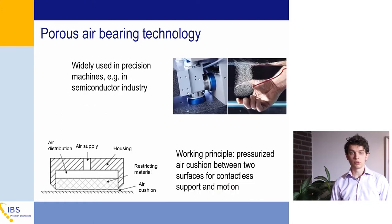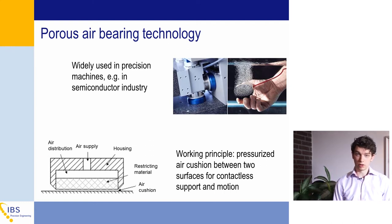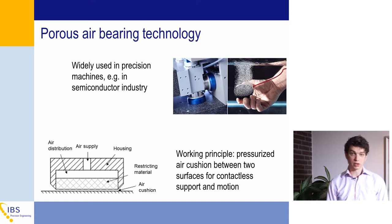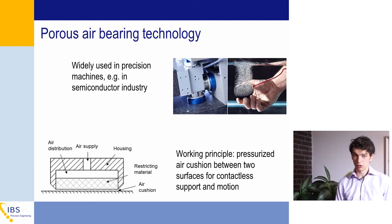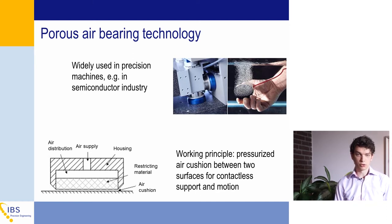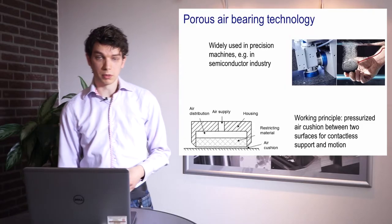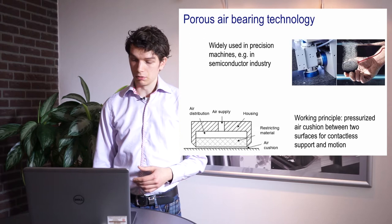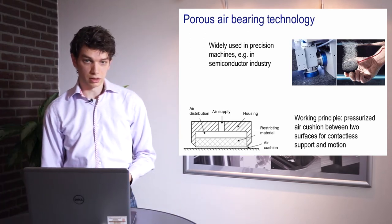First, some introduction about air bearing technology. Air bearings are already widely used in all kinds of precision applications, for instance in the semiconductor industry. The working principle is very simple: a flow of pressurised air is forced through a restricting surface. If this surface is pressed against a flat counter surface, an air cushion is formed, typically 10 microns or more thick. That air cushion allows frictionless and contactless motion between the two components.